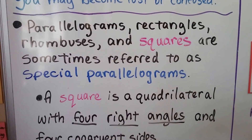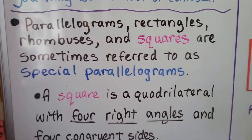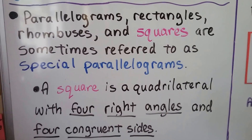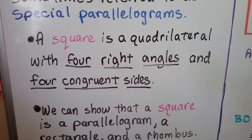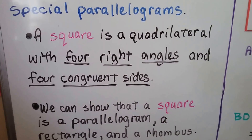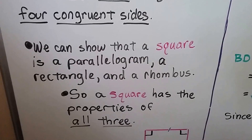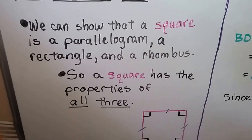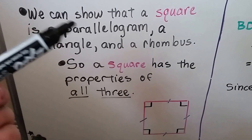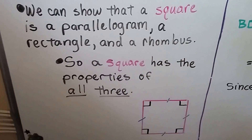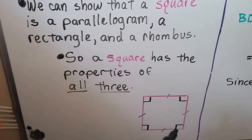Parallelograms, rectangles, rhombuses, and now squares — we've added squares — are sometimes referred to as special parallelograms. A square is a quadrilateral with four right angles and four congruent sides. We can show that a square is a parallelogram, a rectangle, and a rhombus. So a square has the properties of all three: parallelograms, rectangles, and rhombuses. It has four congruent sides and it has four right angles.